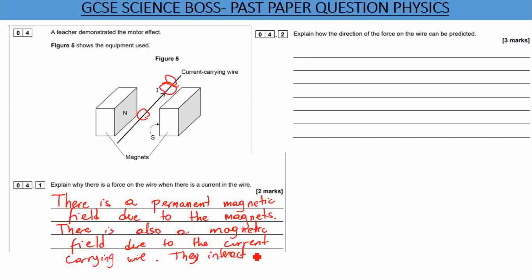Or they cut each other. So it runs from north to south. And there is an interaction there. So they interact. And once you mention that, you're going to get your marks there. So there is some sort of interaction between the magnetic field of the wire and the magnetic field of the magnets. And once you mention that, you're going to get your two marks.